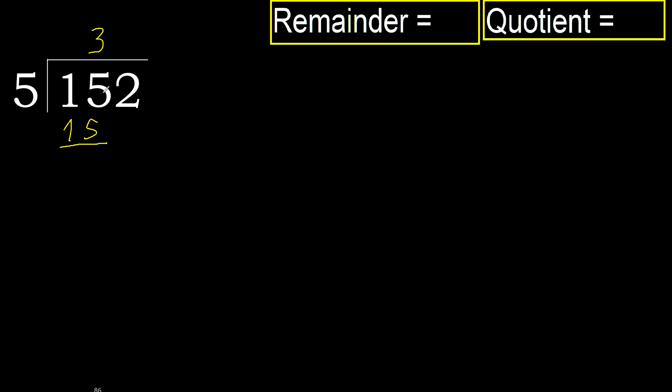Subtract: 15 minus 15 equals 0. Next, bring down — eliminate the 0 on this side. Bring down 2.